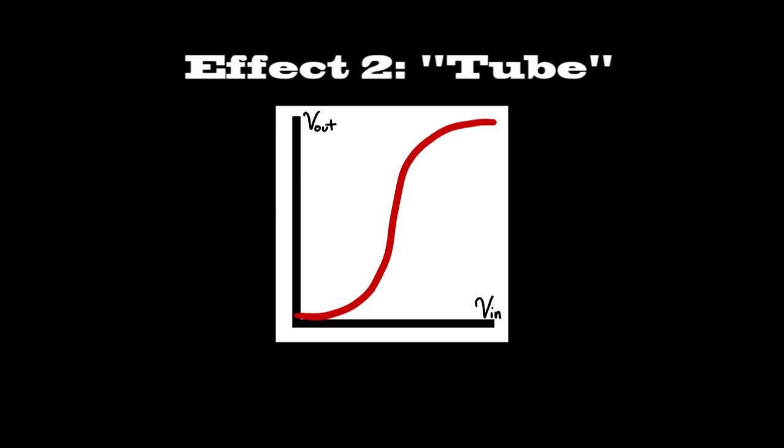The second effect is meant to emulate a tube amp, with a transfer characteristic as shown, where it amplifies the sound to clipping, but doesn't quite clip it harshly like you'd get on a solid-state device.